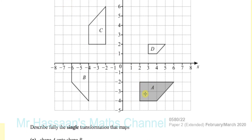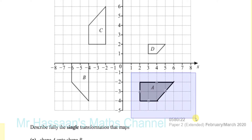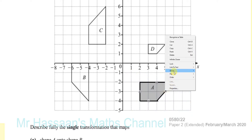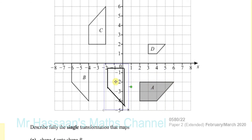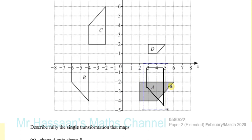The way to tell whether it's a rotation is to use tracing paper, which is very useful in this type of question. Trace the shape, then rotate it around to see if there's a position where it looks exactly the same as shape B. You can see that there is a position where it fits exactly — so it's definitely a rotation.